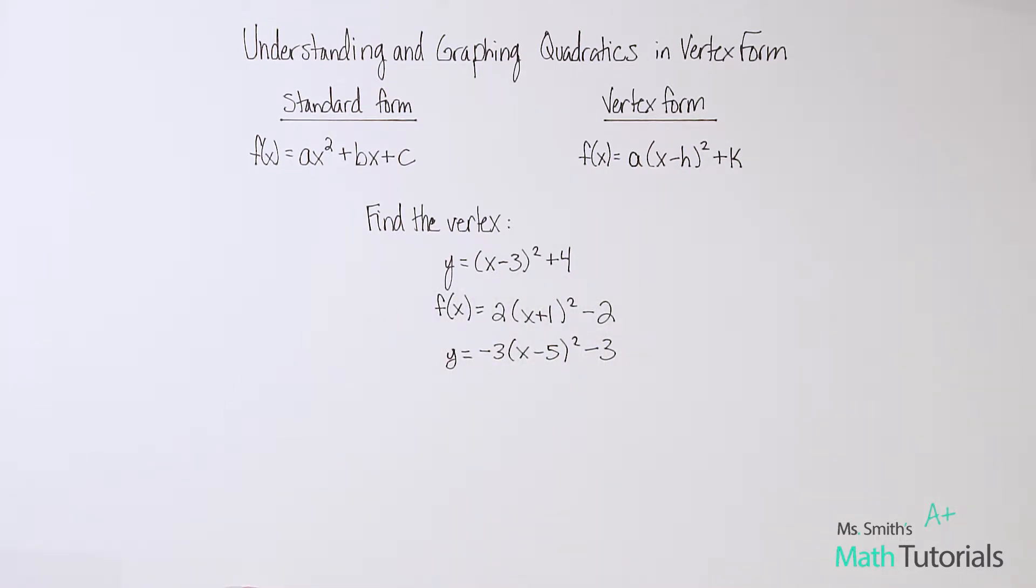So vertex form is f(x) or y equals a times (x minus h)² plus k. And all I really want you to be able to take out of this video is understanding what would the vertex be when given something in vertex form. Let's look at some examples. And I think the best way to learn is just to dive right in and actually experiment with it.